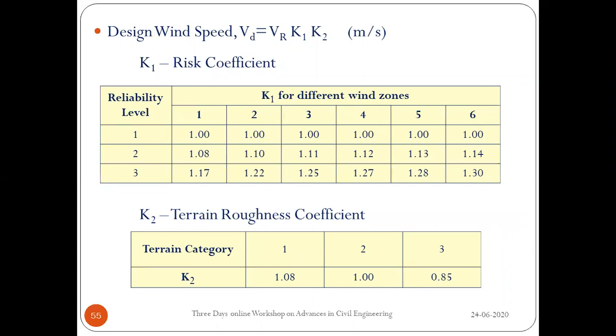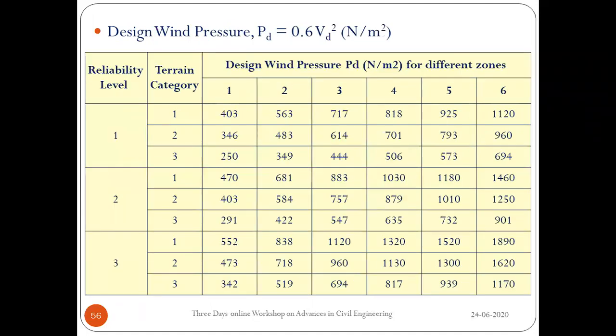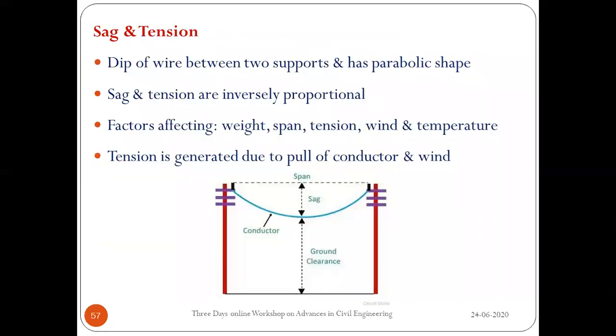Once the reference wind speed is obtained, it is converted to design wind speed by multiplying with a risk coefficient and terrain roughness coefficient from the code. Design wind pressure is then calculated using: 0.6 × (design wind speed)². IS 802 Part 1 Section 1 provides pre-calculated design wind pressures for different reliability levels, terrain categories, and wind zones — for example, Reliability Level 2, Terrain Category 2, Wind Zone 5 gives 1010 N/m².